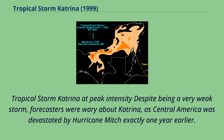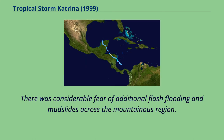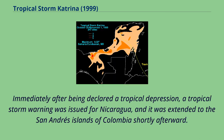Tropical Storm Katrina at peak intensity. Despite being a very weak storm, forecasters were wary about Katrina, as Central America had been devastated by Hurricane Mitch exactly one year earlier. There was considerable fear of additional flash flooding and mudslides across the mountainous region. Immediately after being declared a tropical depression, a tropical storm warning was issued for Nicaragua, and it was extended to the San Andres Islands of Colombia shortly afterward.